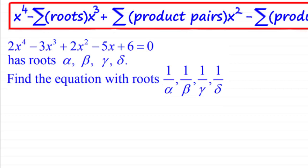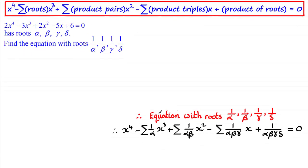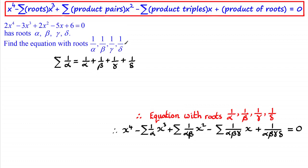The first thing we need to remember is that if we're building this new equation with roots 1 over alpha, 1 over beta, 1 over gamma, and 1 over delta, then that quartic equation takes on this particular form. We've got x to the power four minus the sum of the roots times x cubed — sigma(1/α) represents the sum of those new roots — plus the sum of the product pairs of roots times x squared, given by sigma(1/αβ).